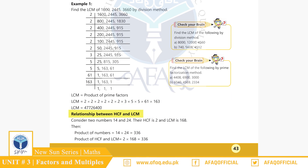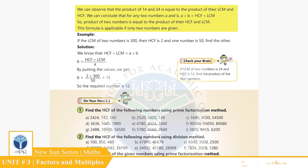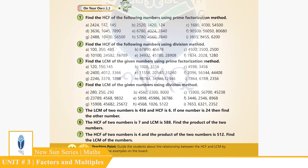اگلا topic ہے Relationship between HCF and LCM، page 43۔ اگر ہمارے پاس کوئی بھی دو numbers a اور b ہوں تو ان کا relationship یہ ہوگا: a × b = HCF × LCM۔ بچوں، exercise سے کچھ سوال حل کرتے ہیں، page 44۔